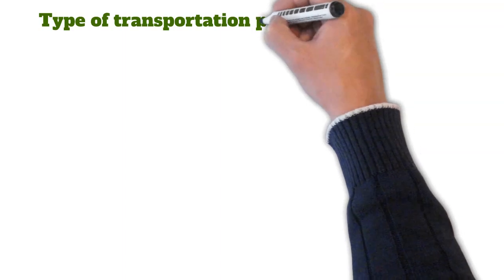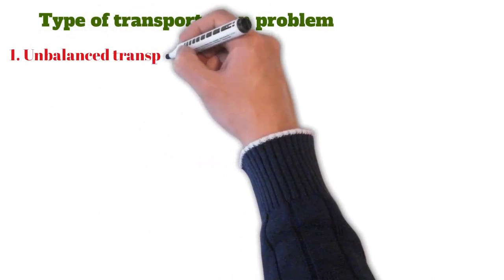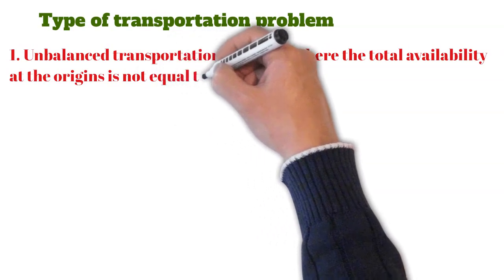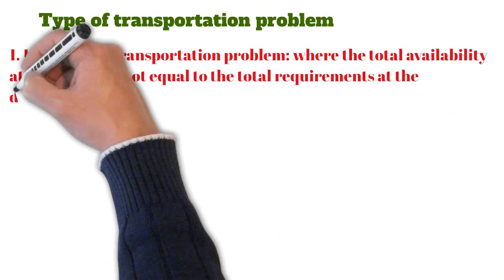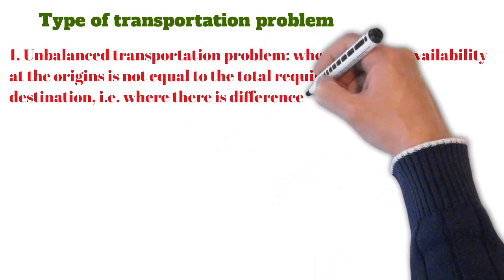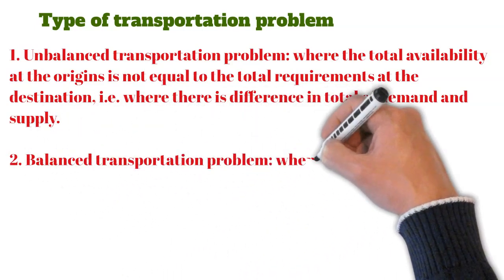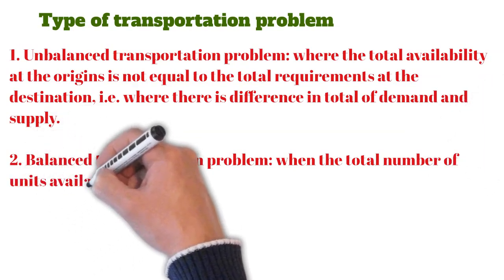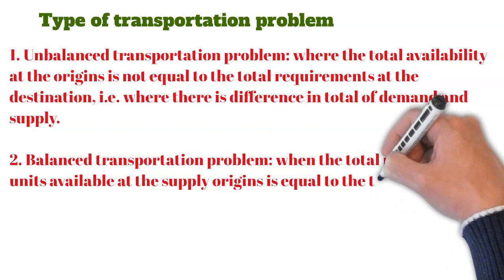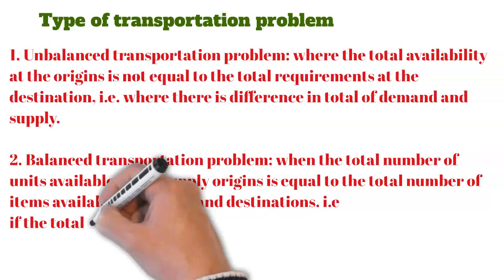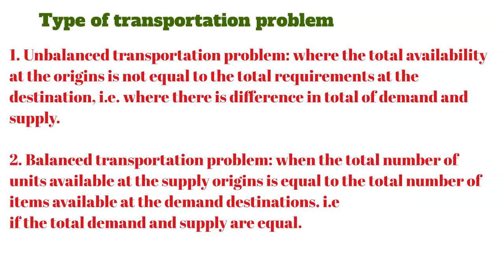Note that after this lecture there is an assessment question at the last slide. We have two types of transportation problems: unbalanced transportation problems, where the total availability at the origin is not equal to the total requirement at the destination — that is, where there is a difference in total demand and supply; and balanced transportation problems, where the number of units available at the supply origin is equal to the number of items at the demand destination, meaning total demand and supply are equal. Thank you for listening.